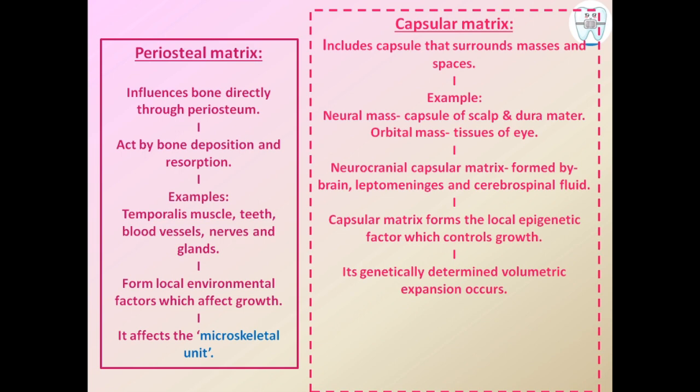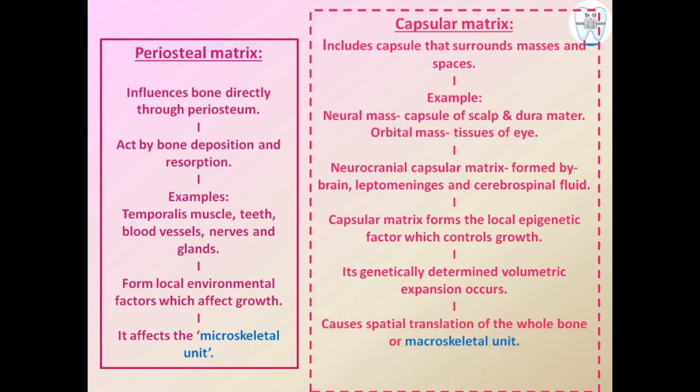The capsular matrix undergoes genetically determined volumetric expansion, meaning its expansion is determined by genes. This causes translation of the macroskeletal unit — movement of the whole bone. The periosteal matrix, on the other hand, forms local environmental factors and causes growth of the microskeletal unit.